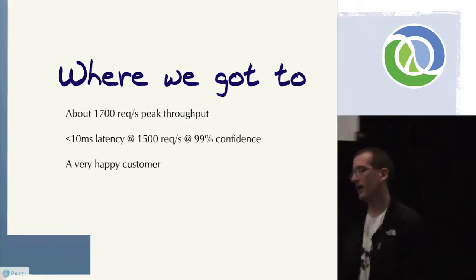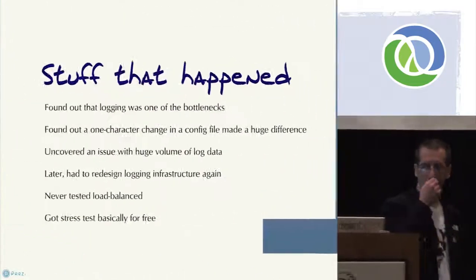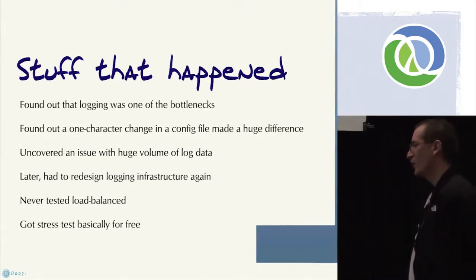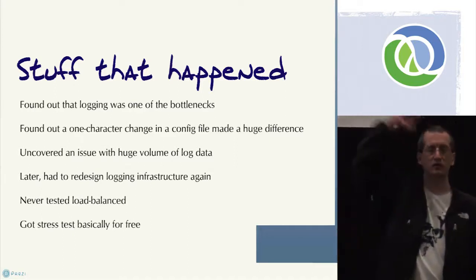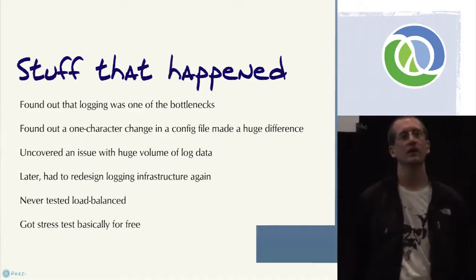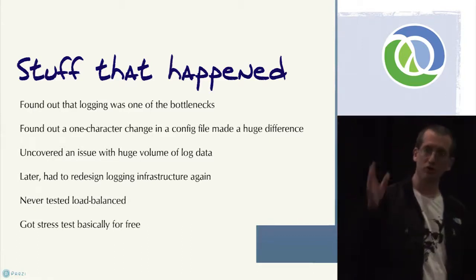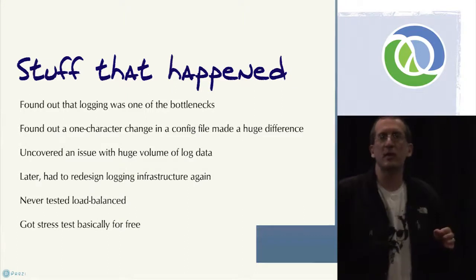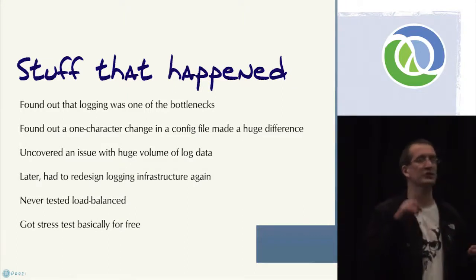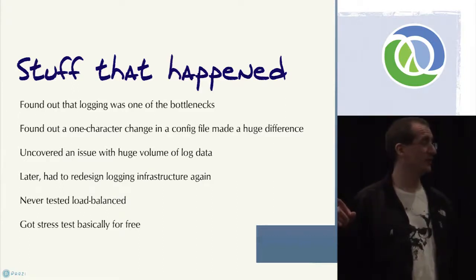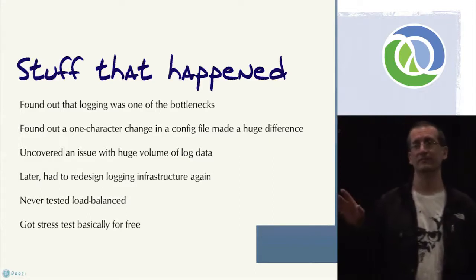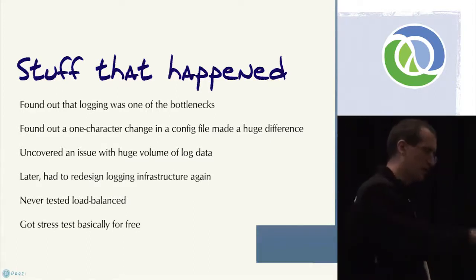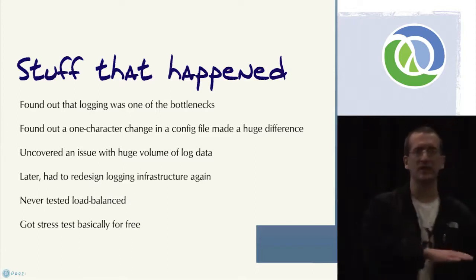Lots of funny things happened along the way. As we did a couple of rounds and took out the easy stuff — which was the database, once we were caching — the thing we found dominating a single request's response time was logging. We were using syslog through syslog4j, and something like 80% of our time in any given request was spent in logging. Totally unexpected. We had one guy on the team who was like 'nah, it's got to be this Clojure thing' — totally not logging. But our analysis showed: wow, that's it.